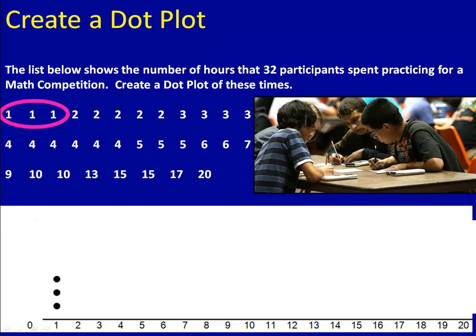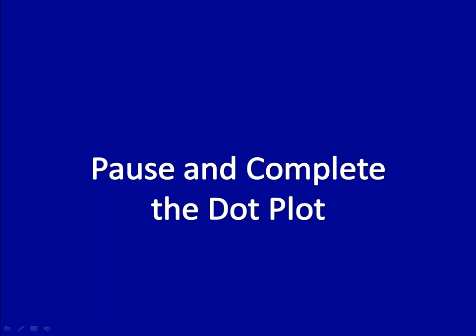Now we have two hours. We see that there were five people who studied for two hours. That means there'll be five dots above the number two. Be sure to space them out evenly. You don't want one of your numbers where the dots are spaced far apart and then another one where they're really close. You should have the same amount of space for each one. Please pause the video here and complete the dot plot based on the data that was given to us.